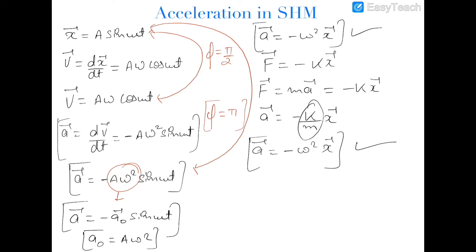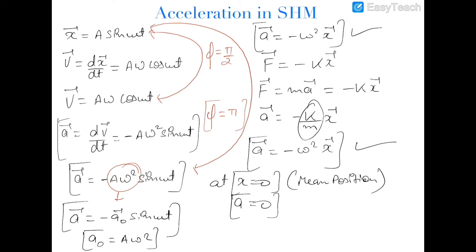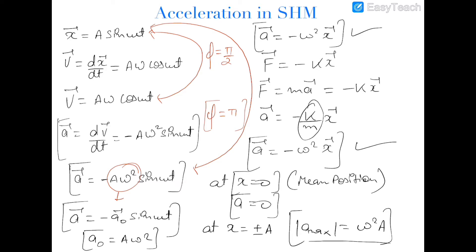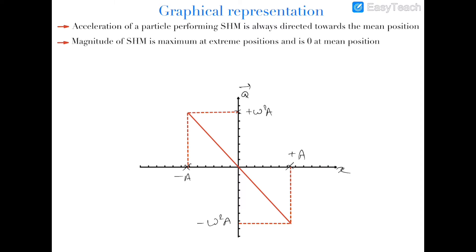At x is equal to zero, which is the mean position, the acceleration of the particle is zero, and we can say that the magnitude of acceleration is minimum at mean position. Now at x is equal to plus or minus a, the magnitude of acceleration is maximum, and that maximum is equal to omega square a. So the maximum acceleration in SHM is omega square a.